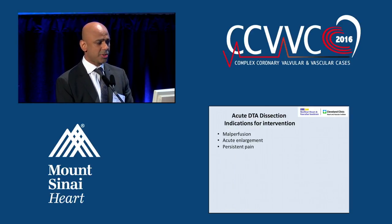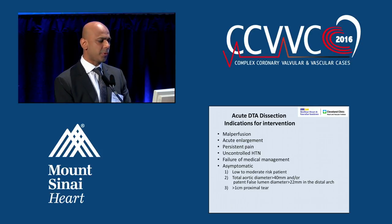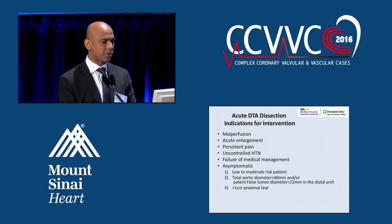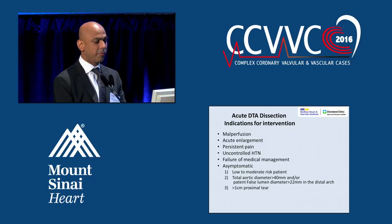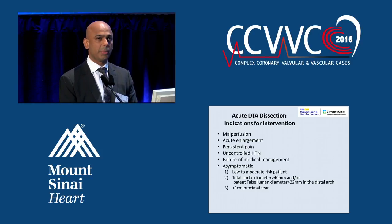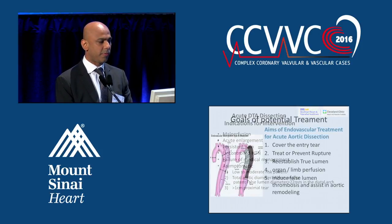There are absolute indications for treating dissections. Some indications for treating uncomplicated dissections include: a total aortic diameter greater than 40 millimeters at the distal arch, a patent false lumen greater than 22 millimeters, and a large one-centimeter proximal tear — any of these can be an indication for treatment.